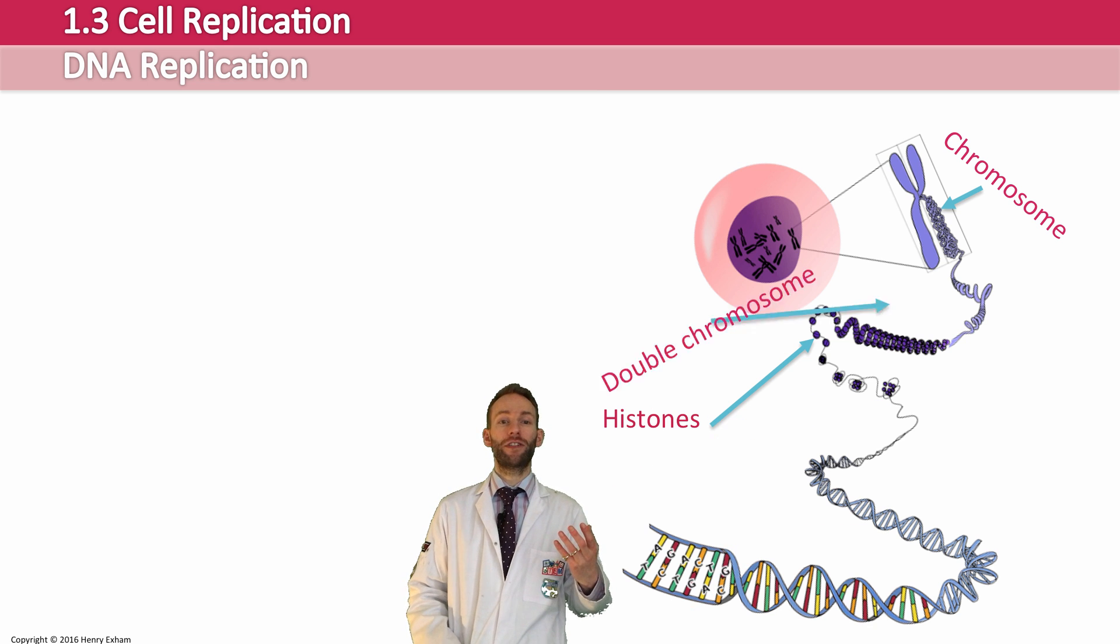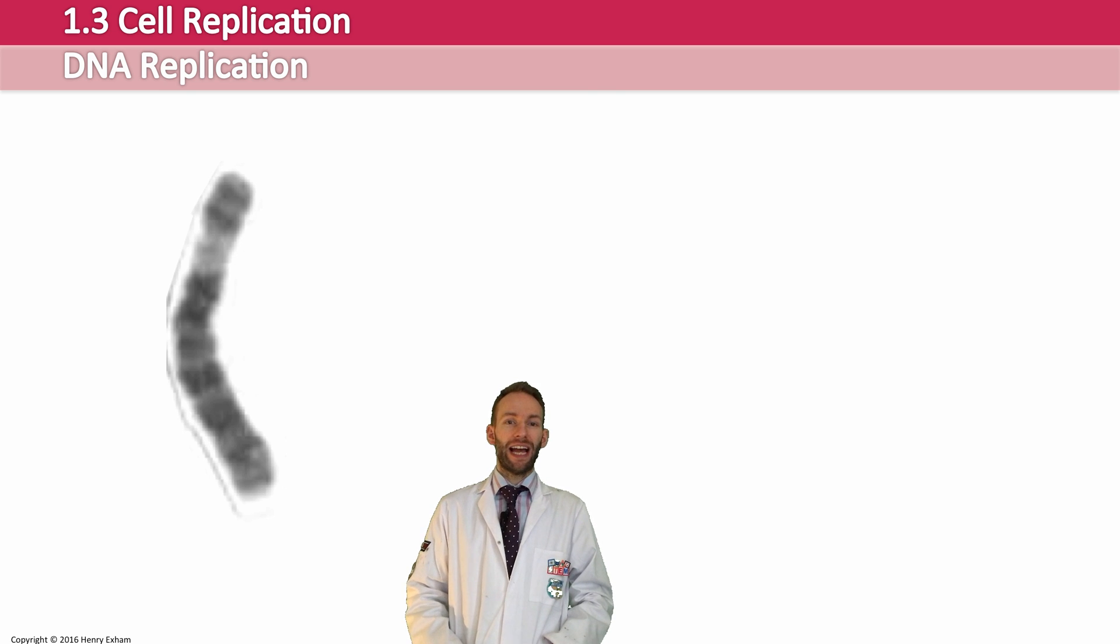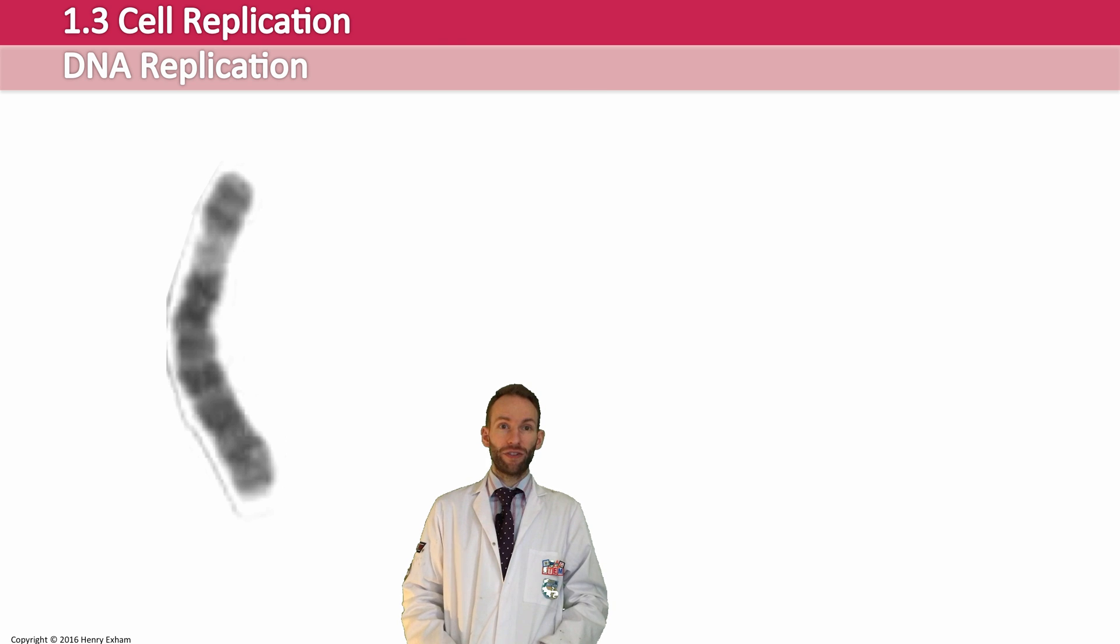So if you take this chromosome, for example, this is chromosome number six in a human. And this is what it would look like in a normal cell. Not that X shape, just a single chromosome like that, a linear chromosome.